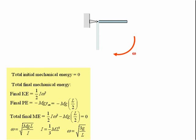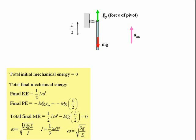In order to find the force exerted by the pivot when the rod is vertical, we can start by drawing a free-body diagram of the rod as it passes through the vertical position. The forces acting on the rod are the force of gravity acting at its centre of mass — that is just Mg — and the force of the pivot upwards, which we'll label Fp. Notice that the acceleration of the centre of mass is vertically upwards at this stage. We now apply Newton's second law for a system of particles to the rod. The resultant external force on the system is equal to the mass of the rod times the acceleration of its centre of mass.